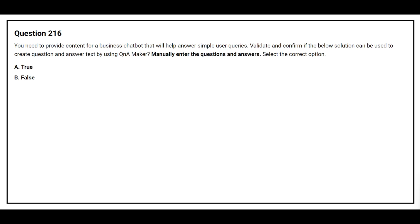Question number 216. You need to provide content for a business chatbot that will help answer simple user queries. Validate and confirm if the below solution can be used to create question and answer text by using Q&A Maker: manually enter the questions and answers. Select the correct option. Option A: True. Option B: False. The correct answer is Option A, True.